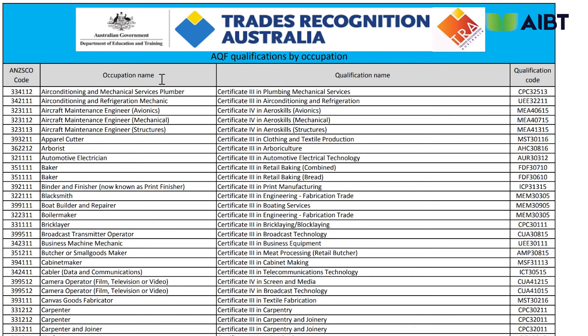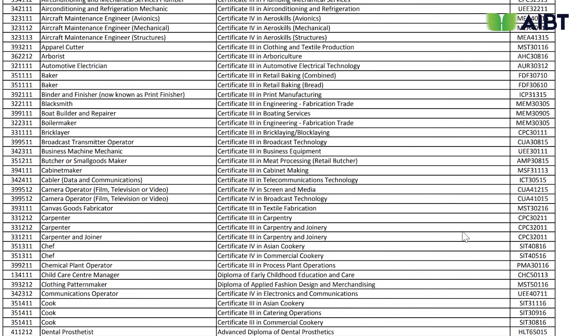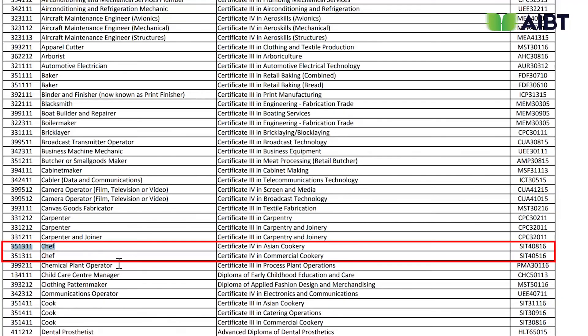In this PDF, you can see the ANZSCO code, occupation names, qualification names, and qualification codes — all recognized by the TRA evaluating body. We should check the qualification code to confirm our course is on the list of evaluating agencies. For example, we'll choose SIT 40816, Certificate 4 in Asian Cookery, and copy the qualification code from the right side of the list. Next, we'll outline qualifications that are recognized by TRA and also registered with AIBT.